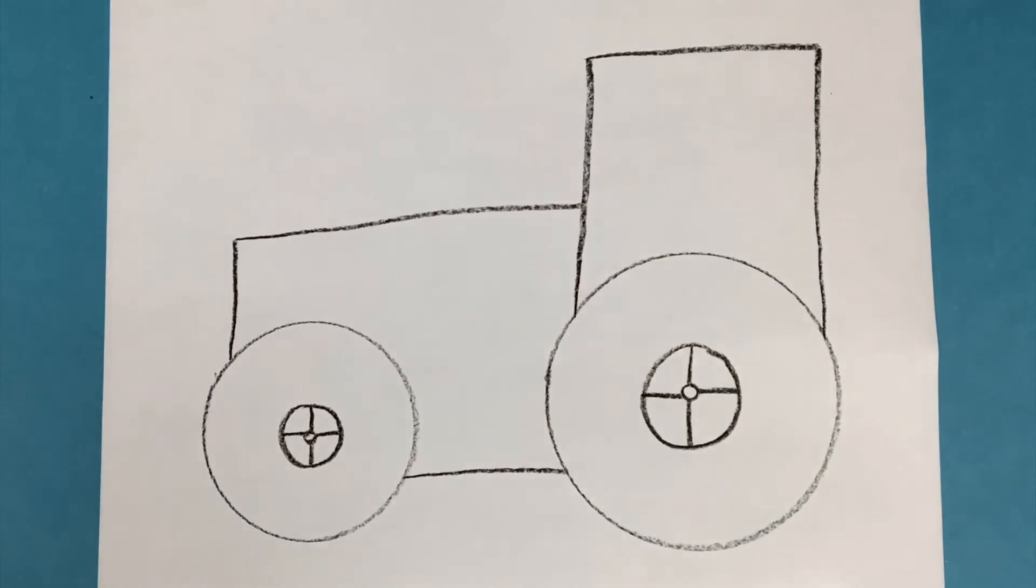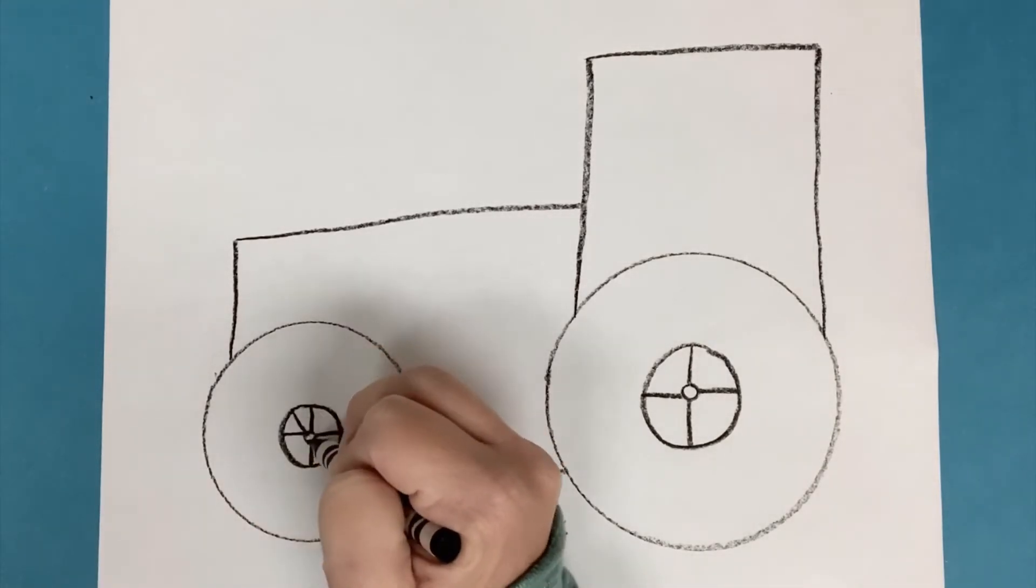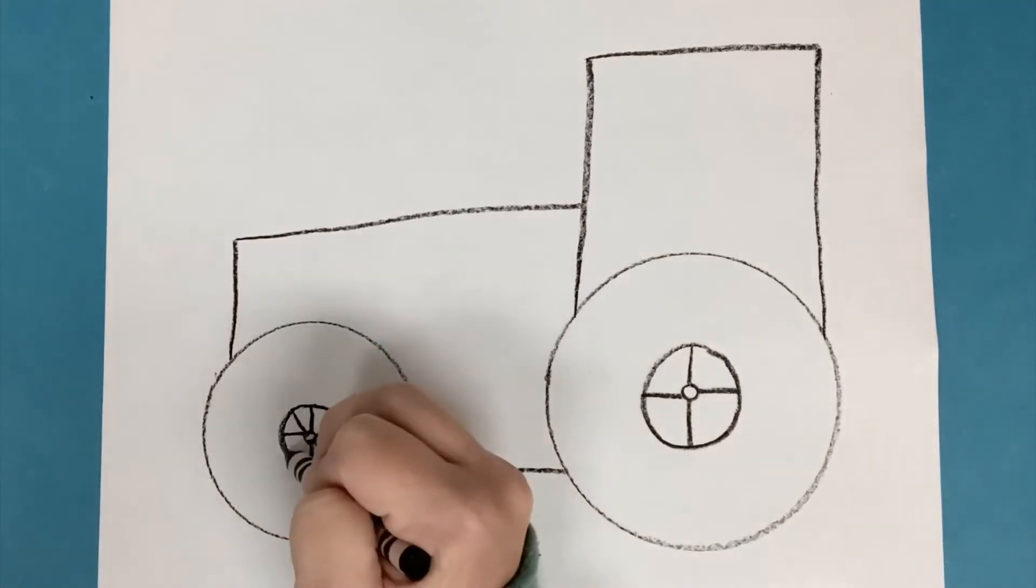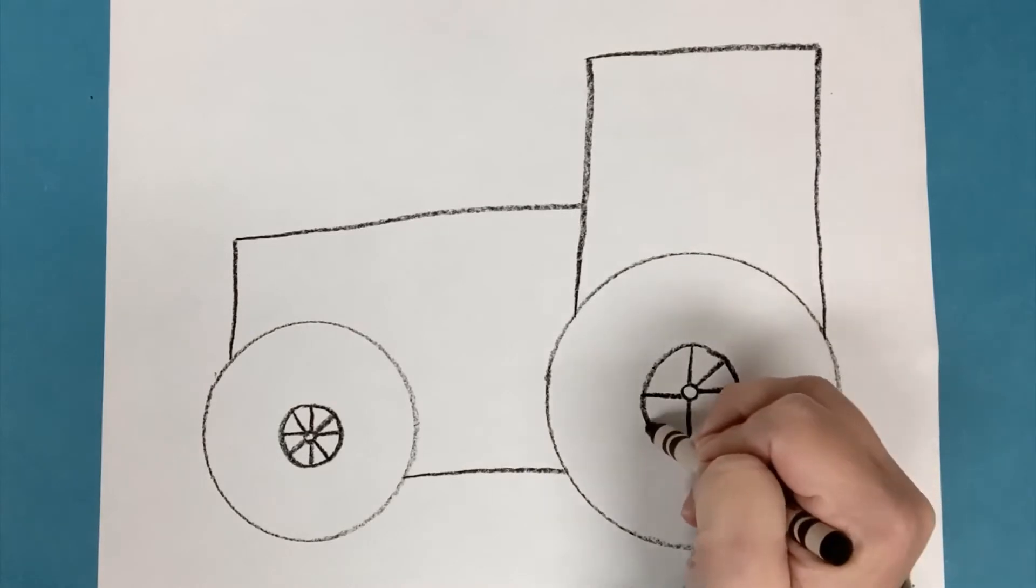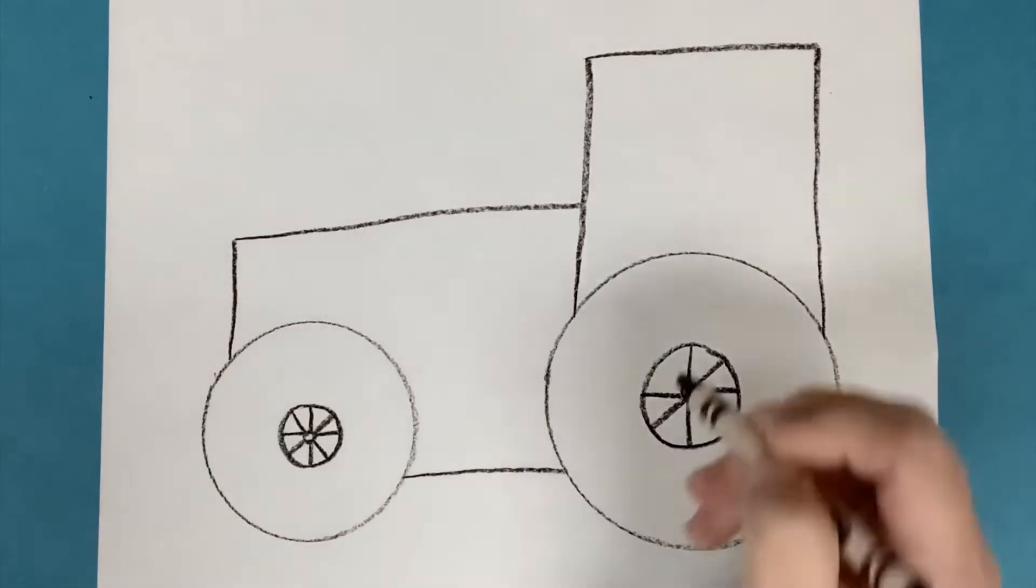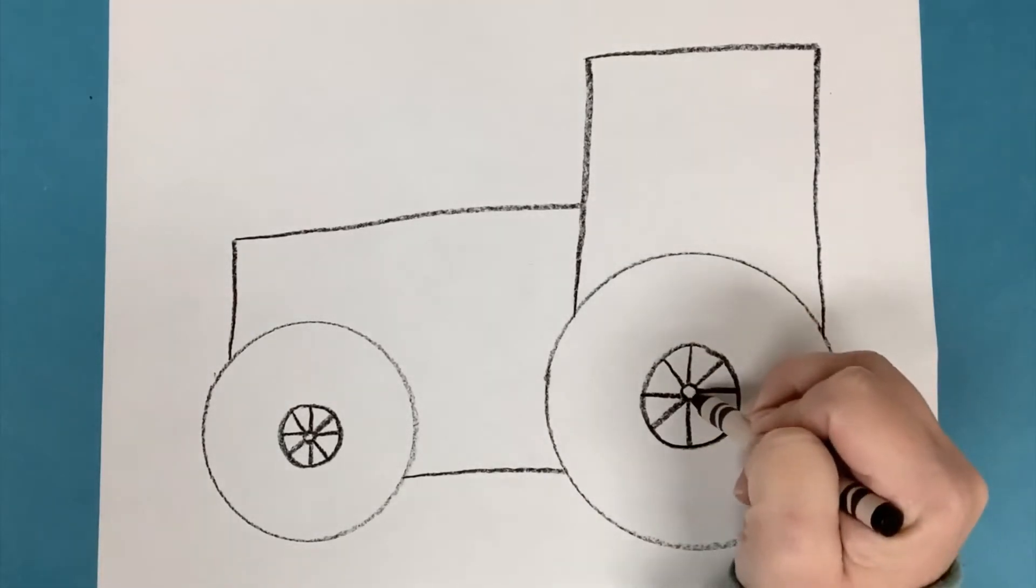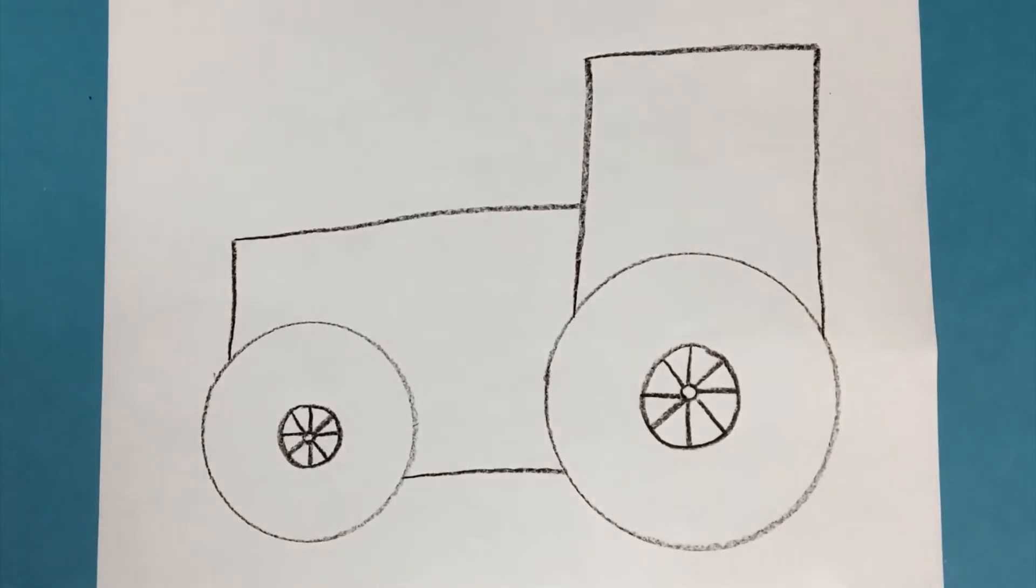Okay, and now let's put a diagonal line on each of those sections like that. Diagonal. And now diagonal on this section. And now I've got my wheels.